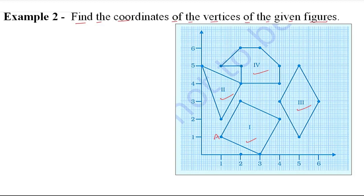In the first figure we name the vertices I, J, K. Then in the next figures we name L, M, N, O, P, Q. Now we have to write the coordinate of every point. Let's write them alongside each point first, then write the solution — this will be easier.